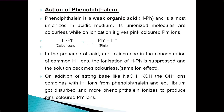On ionization, phenolphthalein gives pink-colored Ph⁻ ions. This system can be denoted as: HPh undergoes ionization to give Ph⁻ ions and H⁺ ions. So when it is unionized it will be colorless, and when it is ionized it has got a pink color because of the Ph⁻ ions.